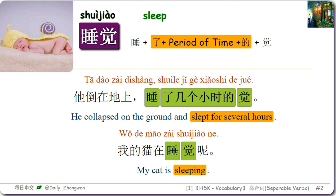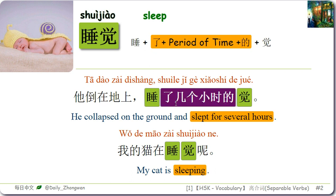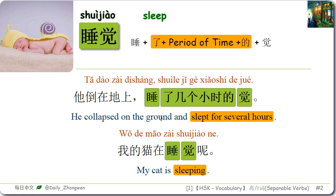睡觉 is a very common separable word. You can place different elements between 睡 and 觉 to create some phrases. For example: 他倒在地上睡了几个小时的觉 — He collapsed on the ground and slept for several hours. There are other examples like this in Chinese: 睡了一大觉, meaning have a long sleep.